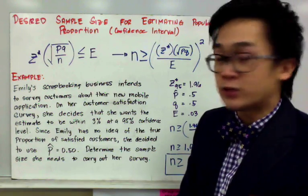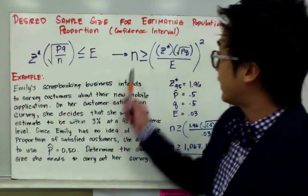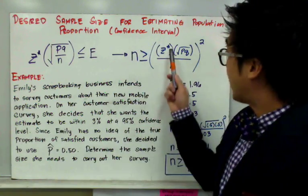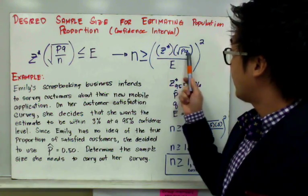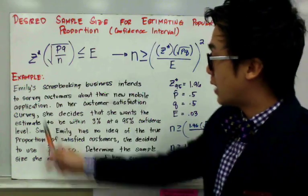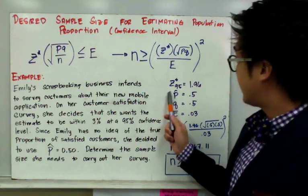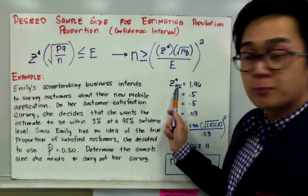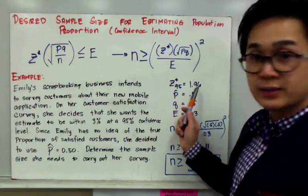The first step is to find all the values that we will need for our formula. We need our Z star, P, Q, and E. In the word problem, they are all given.